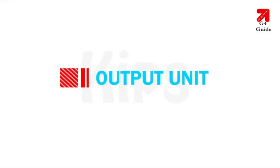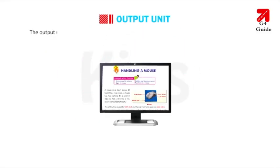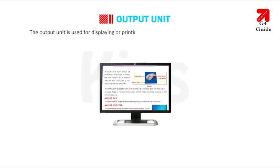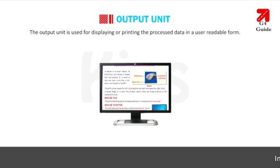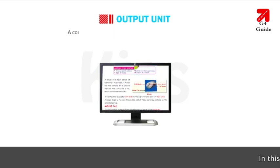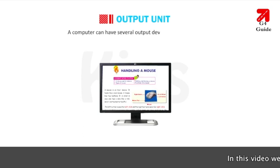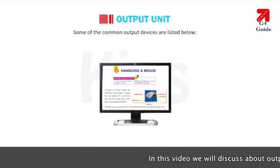Ok students, let us discuss about the Output Unit. The Output Unit is used for displaying or printing the processed data in a user-readable form. A computer can have several output devices attached to it. Some of the common output devices are listed below.